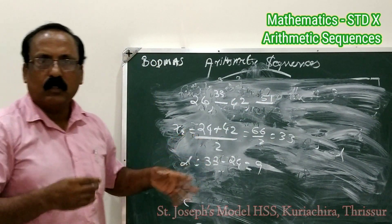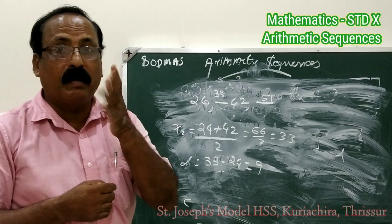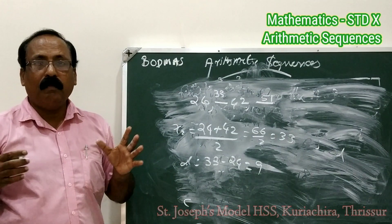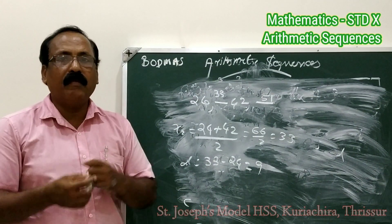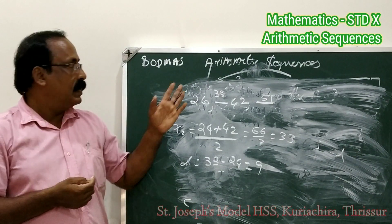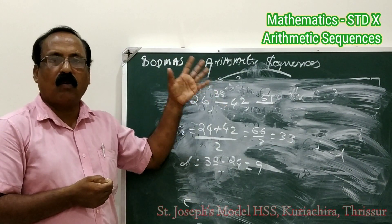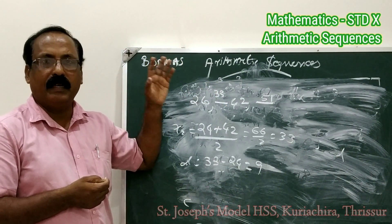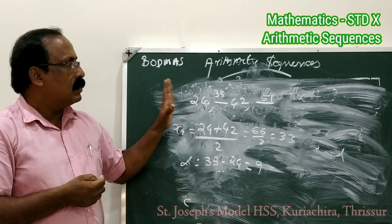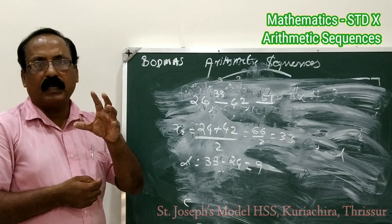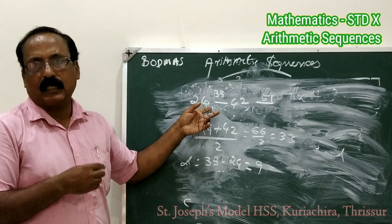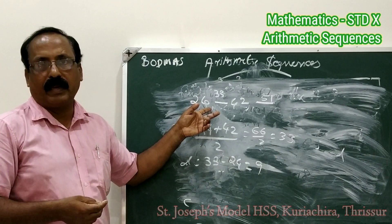Let us conclude the portion. What is an arithmetic sequence? Each term is subtracted from its succeeding term and we get a constant number — such a sequence is an arithmetic sequence. What is the common difference? What is the algebraic form of an arithmetic sequence in different cases? Today I am going to conclude this portion. You have to write notes from your textbook, and next day we will continue. Good day.